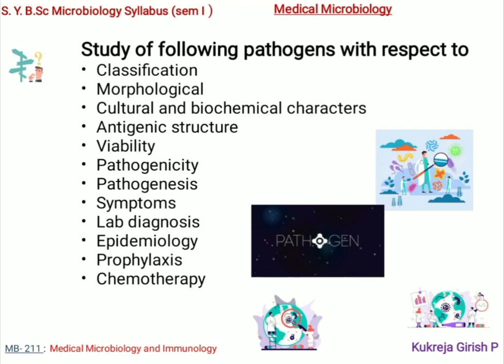With the knowledge of these terms, we will now focus on the specific study of pathogens. The next section includes the study of various pathogens with respect to their characteristics: classification, morphological, cultural and biochemical characters, Antigenic Structure, Viability, Pathogenicity, Pathogenesis, Symptoms, Lab Diagnosis, Epidemiology, Prophylaxis, and Chemotherapy — giving us a complete picture about each particular pathogen.